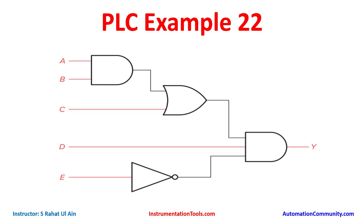We will connect A and B in series, and then connect C in parallel with A and B to implement an OR logic gate. After that, we insert a normally open contact for input D in series, and E as a normally closed contact also connected in series.